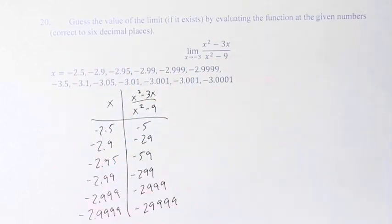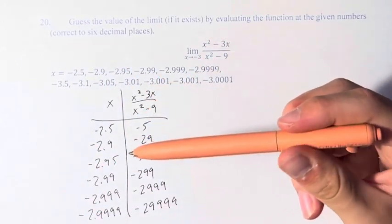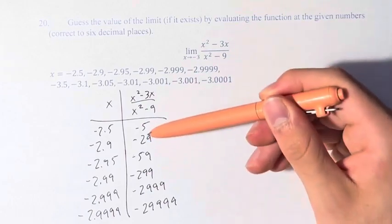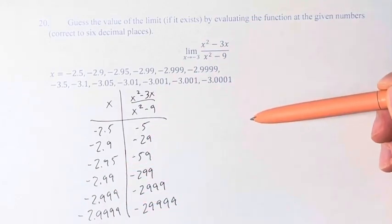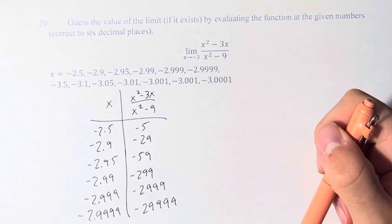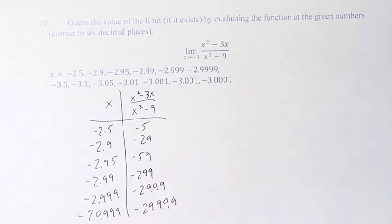And it says correct to six decimal places, but the point at which there is another decimal that isn't a zero after these is like 10 down the line. So this is correct to six decimal places, no rounding necessary.